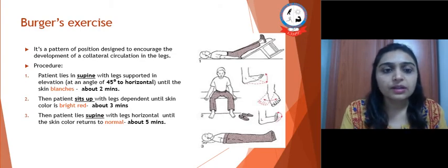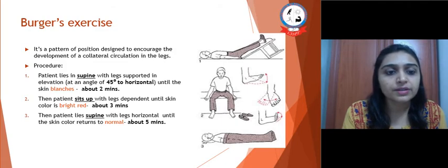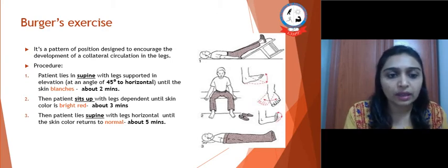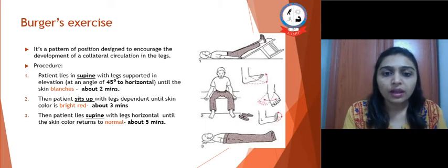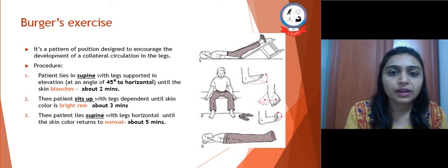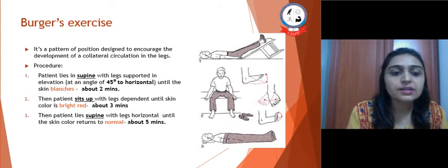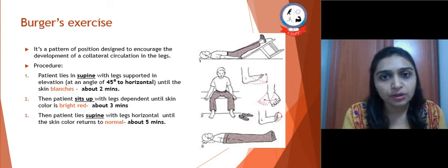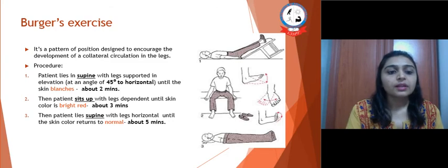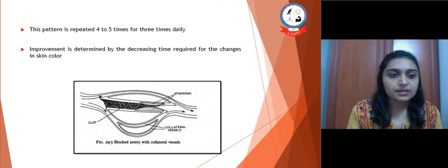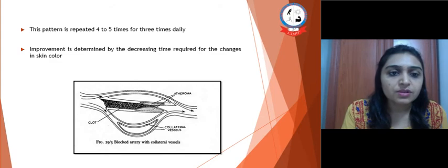Buerger's exercises are a pattern of positions designed to encourage the development of collateral circulation in the legs. The procedure: first, the patient lies supine with the legs supported in elevation at 45 degrees until the skin blanches — approximately 2 minutes. After that, the patient sits up with the legs in a dependent position until the skin color becomes bright red, approximately 3 minutes. Then the patient lies supine with legs horizontal until the skin color returns to normal, approximately 5 minutes. This exercise pattern is repeated 4 to 5 times, three times a day.